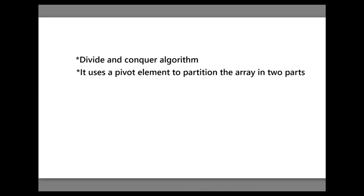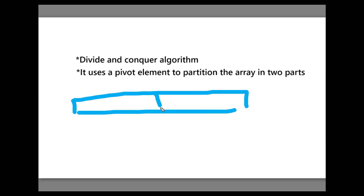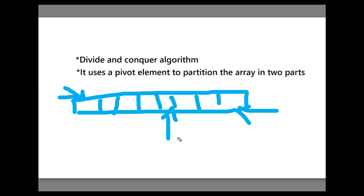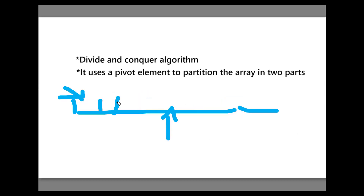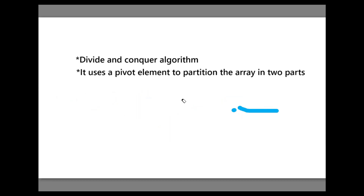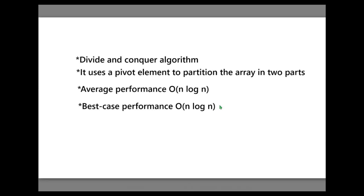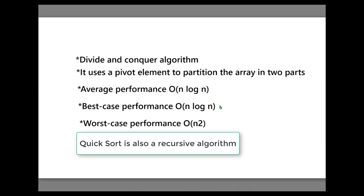For example, if this is an array, we can take the first element as pivot or the last element as pivot. Its average performance is O(n log n), its best case performance is also O(n log n), but worst case performance is O(n²), which is worst.